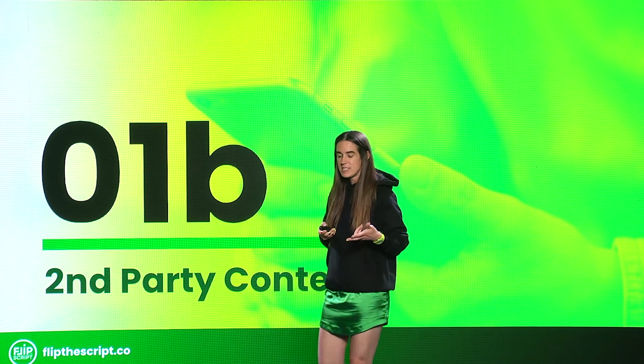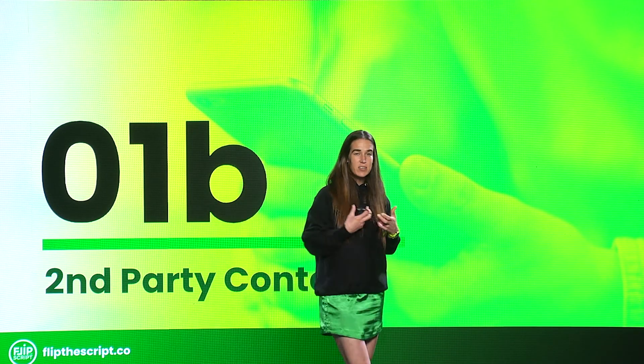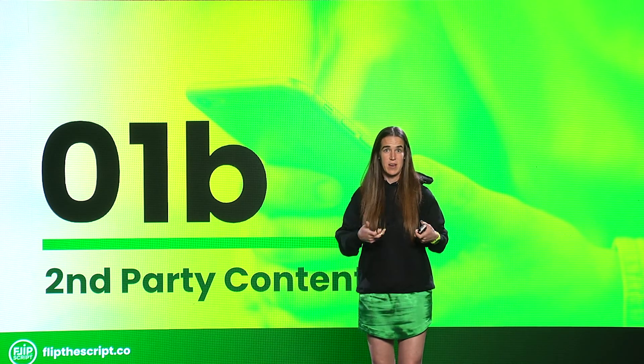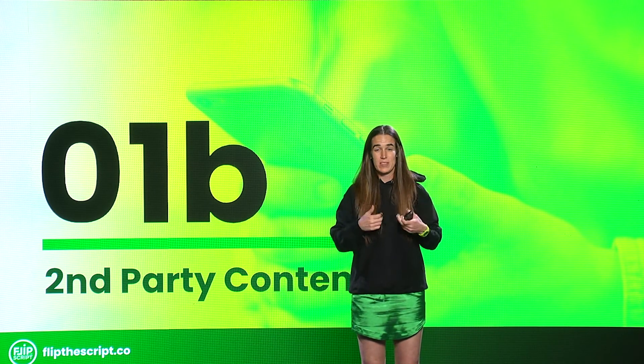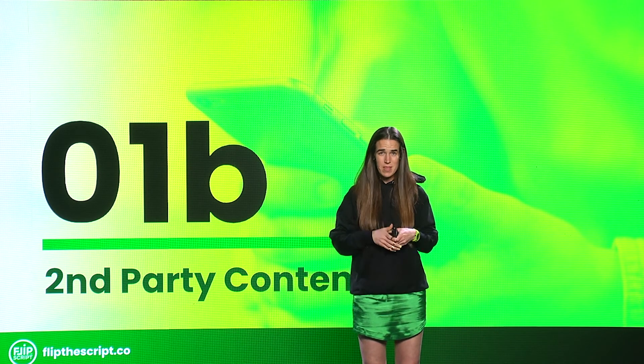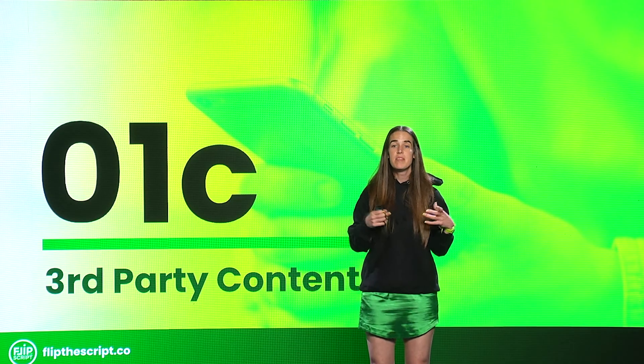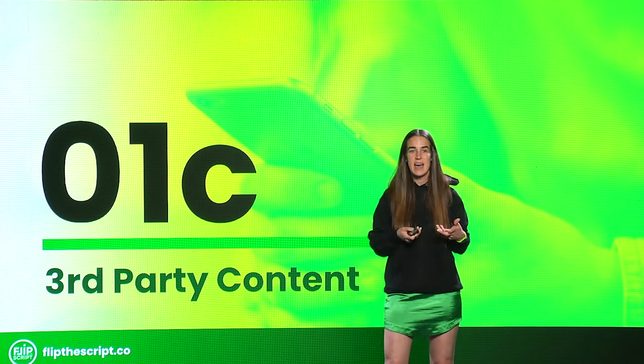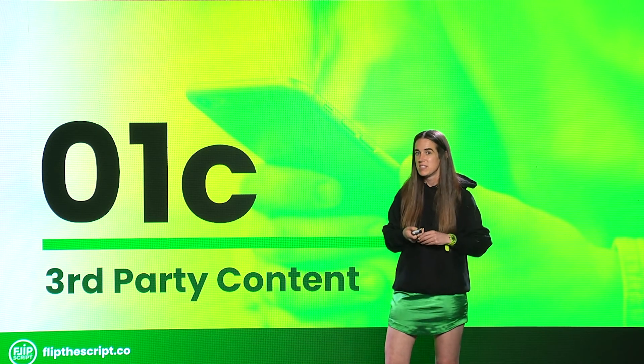The second type is second party content. In this type, I am still the arbiter of the information, but it's someone else's data. Again, because there's some level of agenda behind it — how do I represent this data in a way that supports my use case — people won't trust it as much. And then third party content, which is the most golden content to use, is something written by someone else. This is the content your prospective buyers will trust the most because you weren't the author of it.